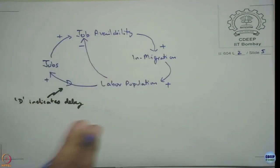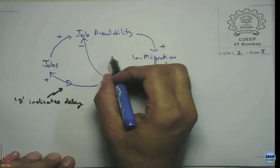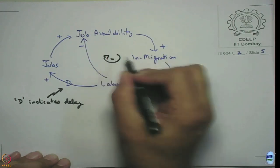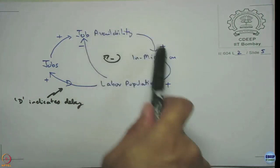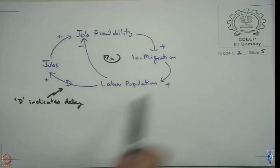The idea is not just to make the diagram but to have discussions revolve around it. As job availability is more, immigration increases, which increases labor population, which absorbs jobs and decreases job availability, which slows down migration, which slows labor population growth — it comes to some sort of balance. So this inner loop is a balancing loop, a negative feedback loop. There is also an outer loop: job availability increases immigration, labor population increases, jobs increase, which again increases job availability — that is a positive feedback reinforcing loop. This model has two loops: an inner loop and an outer loop.